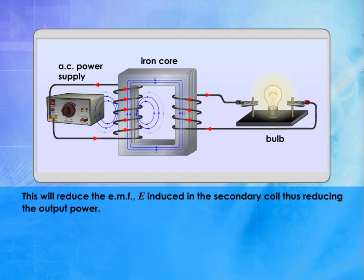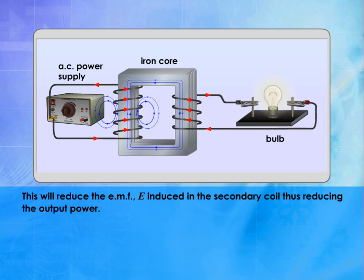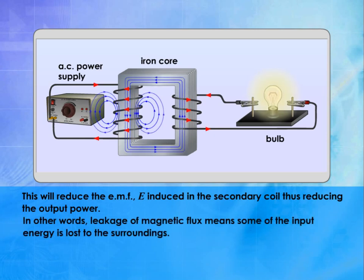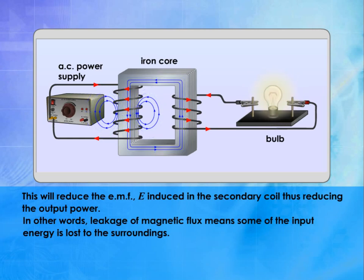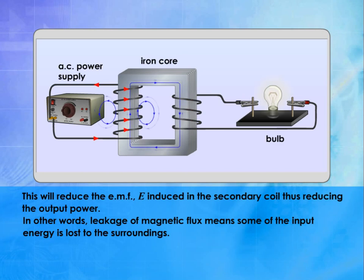This will reduce the EMF induced in the secondary coil, thus reducing the output power. In other words, leakage of magnetic flux means some of the input energy is lost to the surroundings.